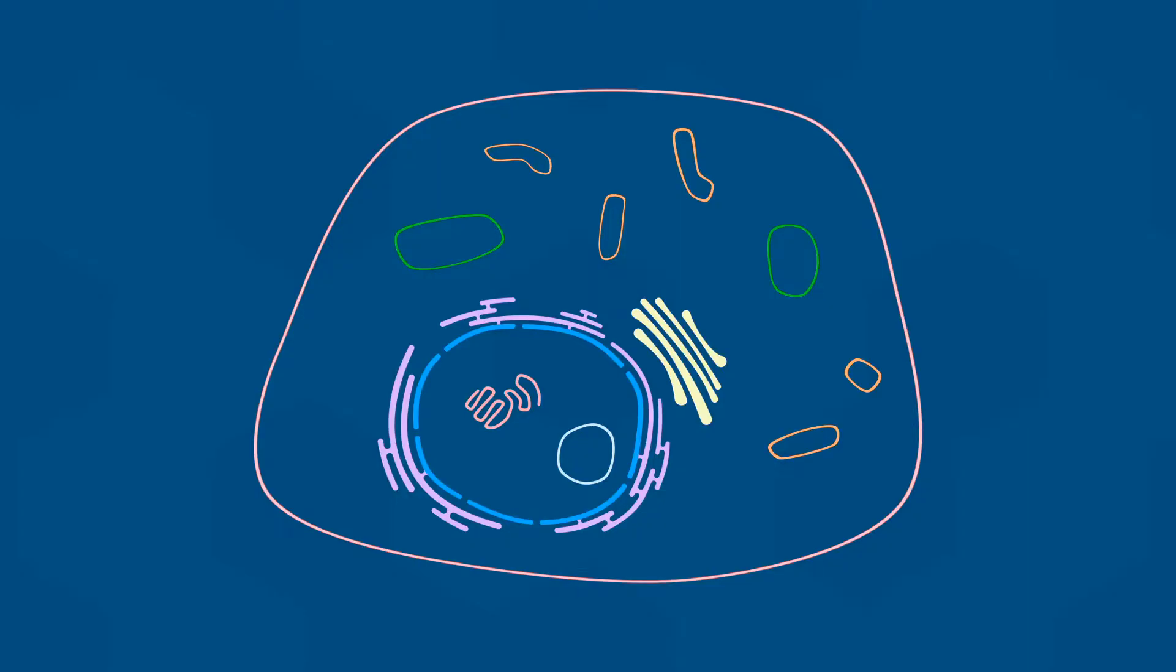This container serves as a perimeter fence, a barrier to the environment, a wall to hold stuff in, and a gateway for things that need to move in and out. This amazing structure is what we call the cell membrane.